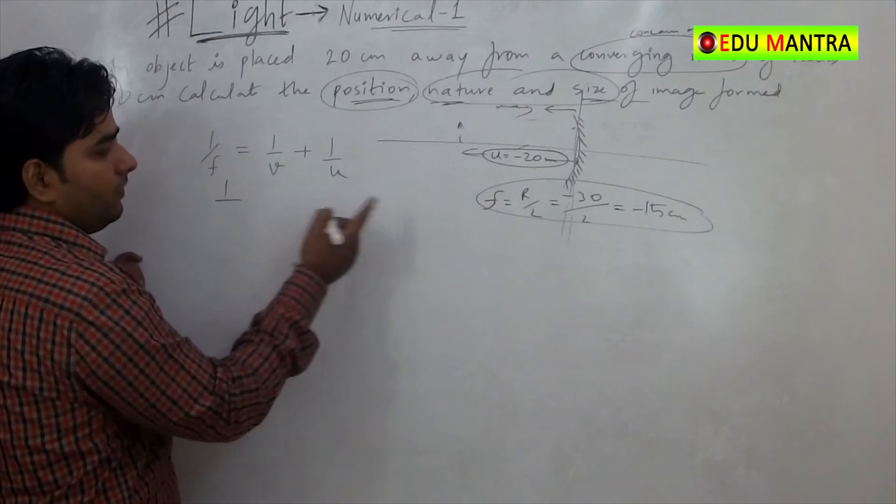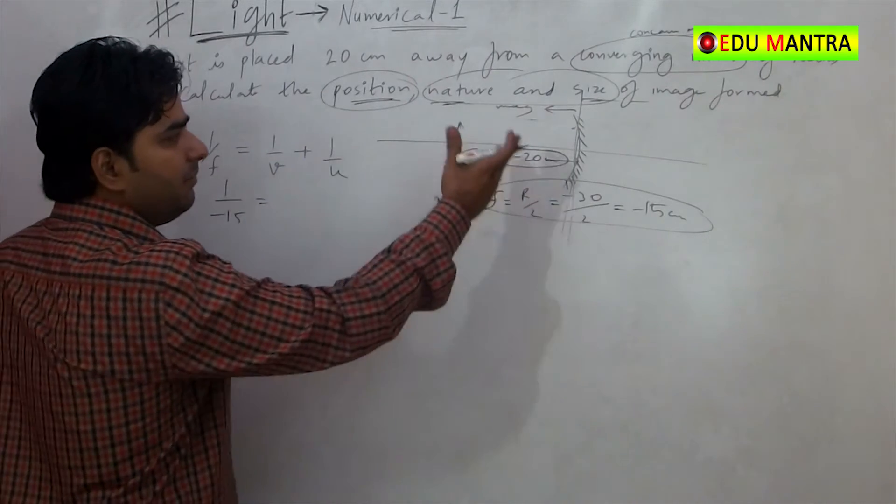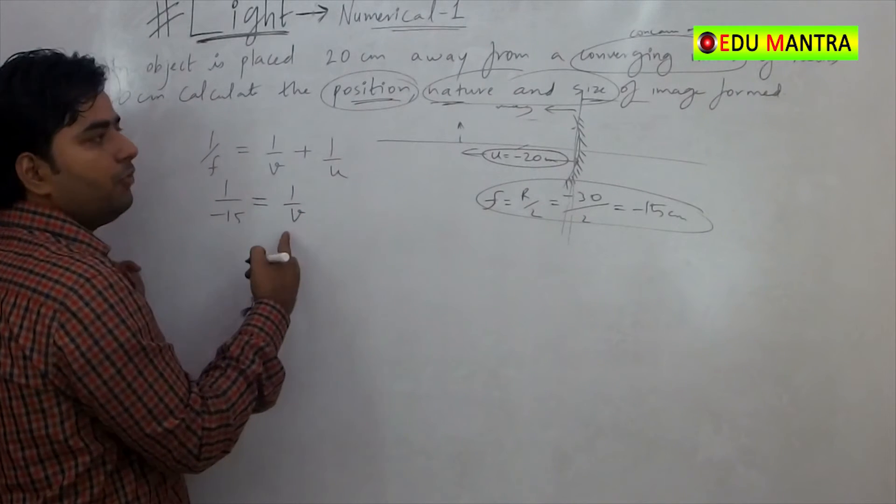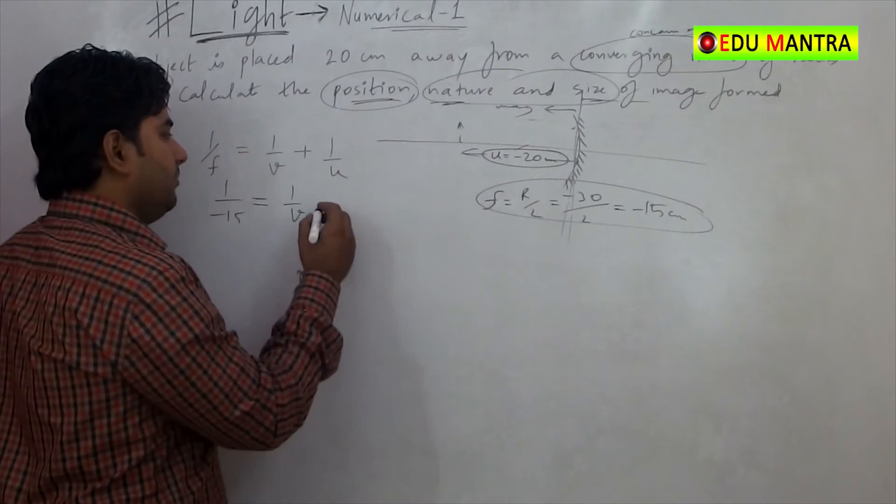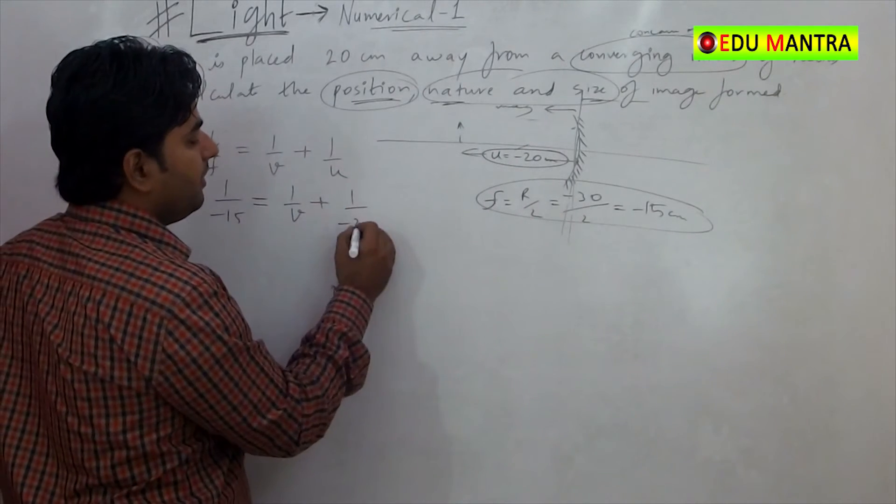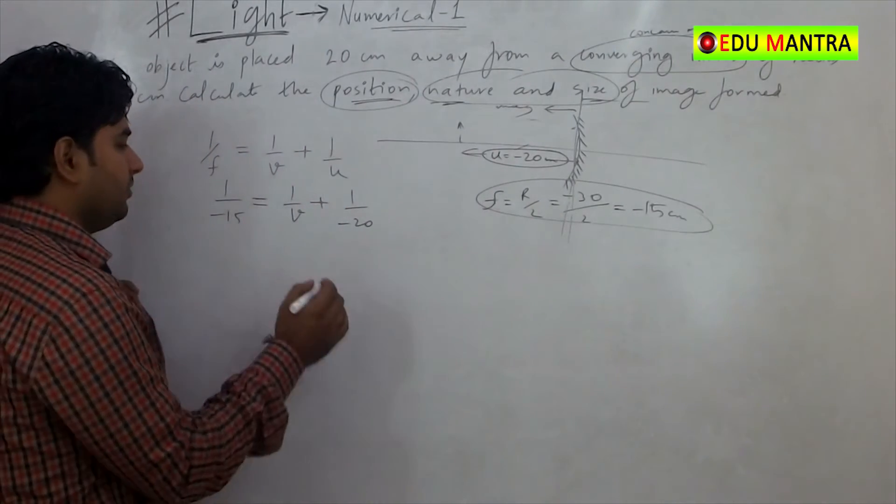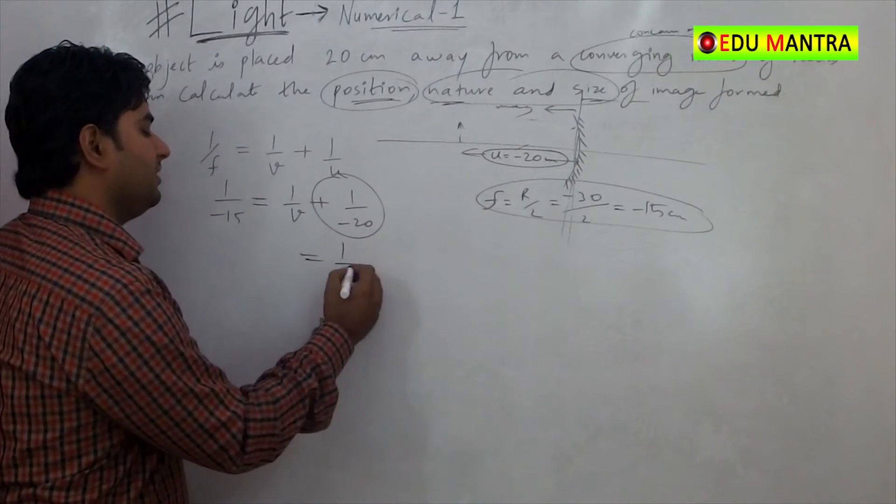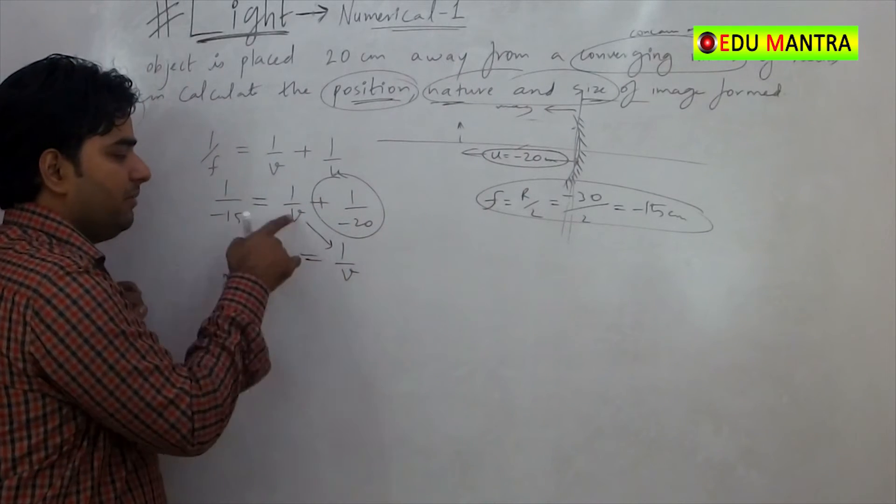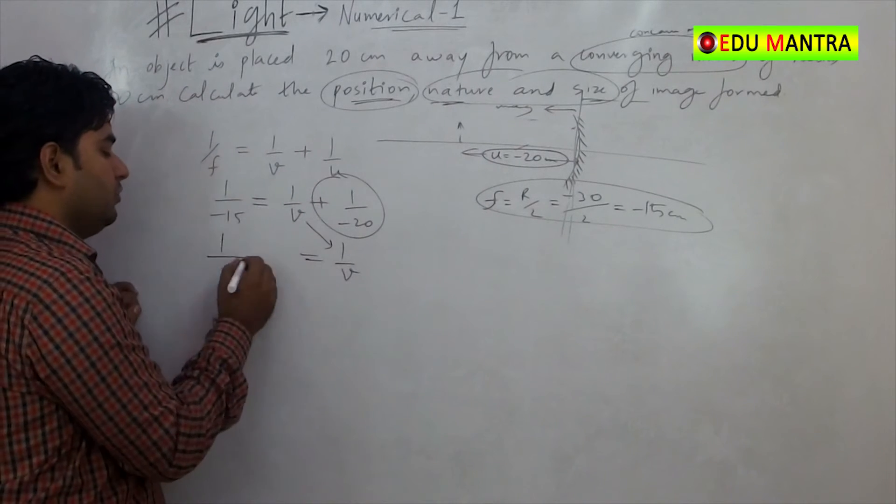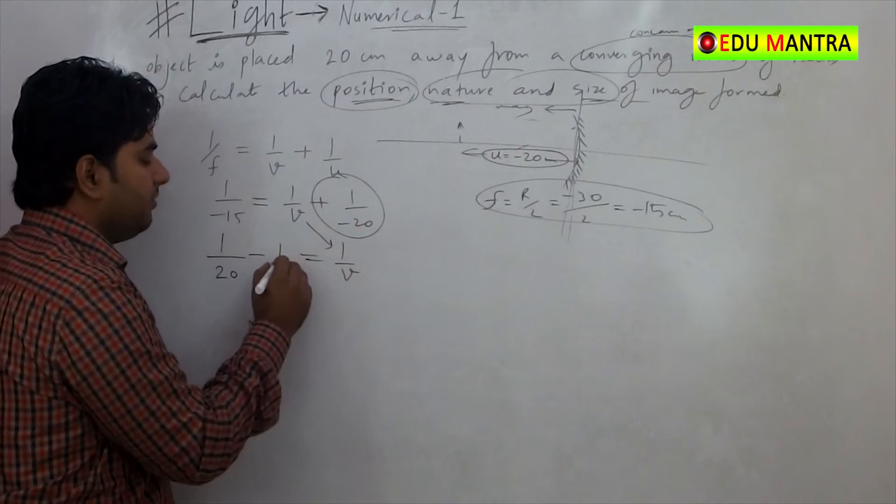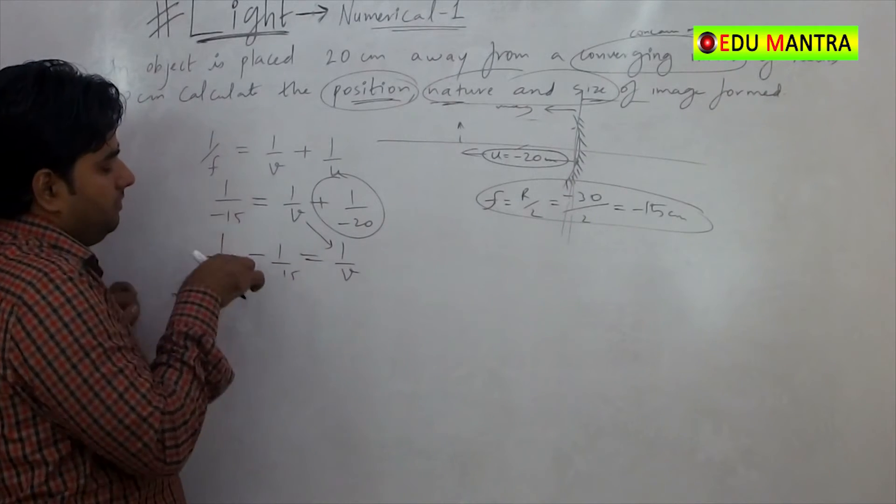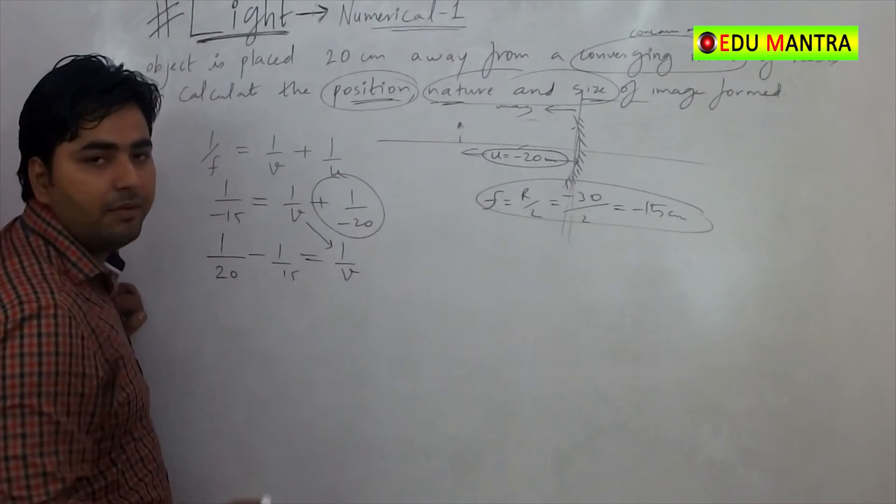So, 1 by minus 15, all in centimeters, is equal to 1 by v, which we have to find, the image position, plus 1 by u. What is u? Minus 20. So that is minus 1 by 20. Bringing it to the other side, it becomes plus 1 by 20. So, it is 1 by v equals minus 1 by 15 plus 1 by 20.